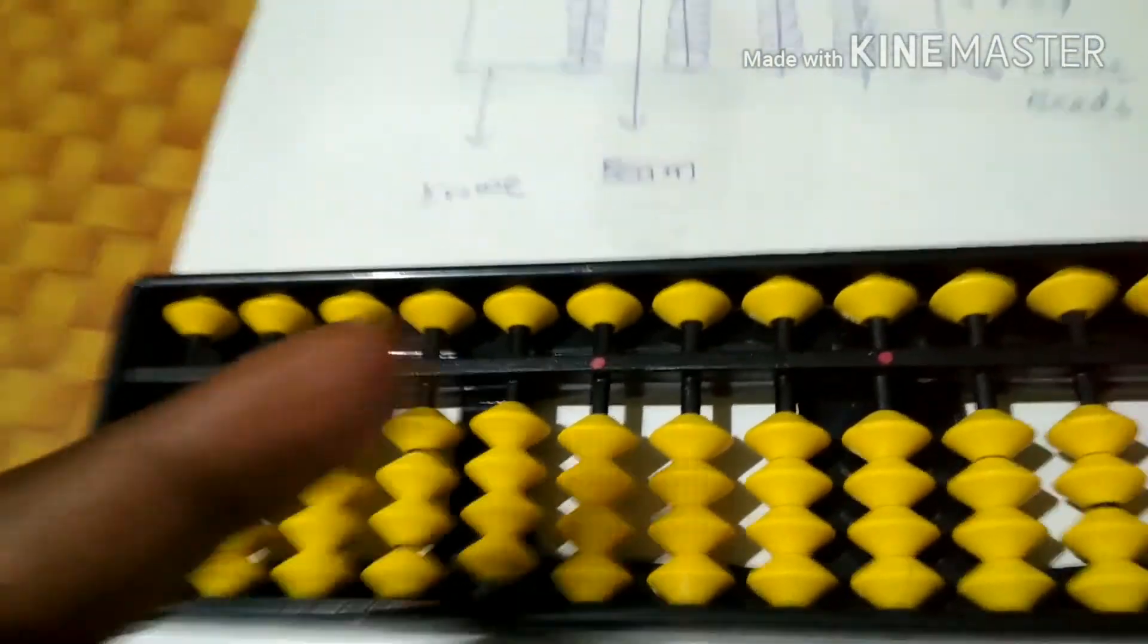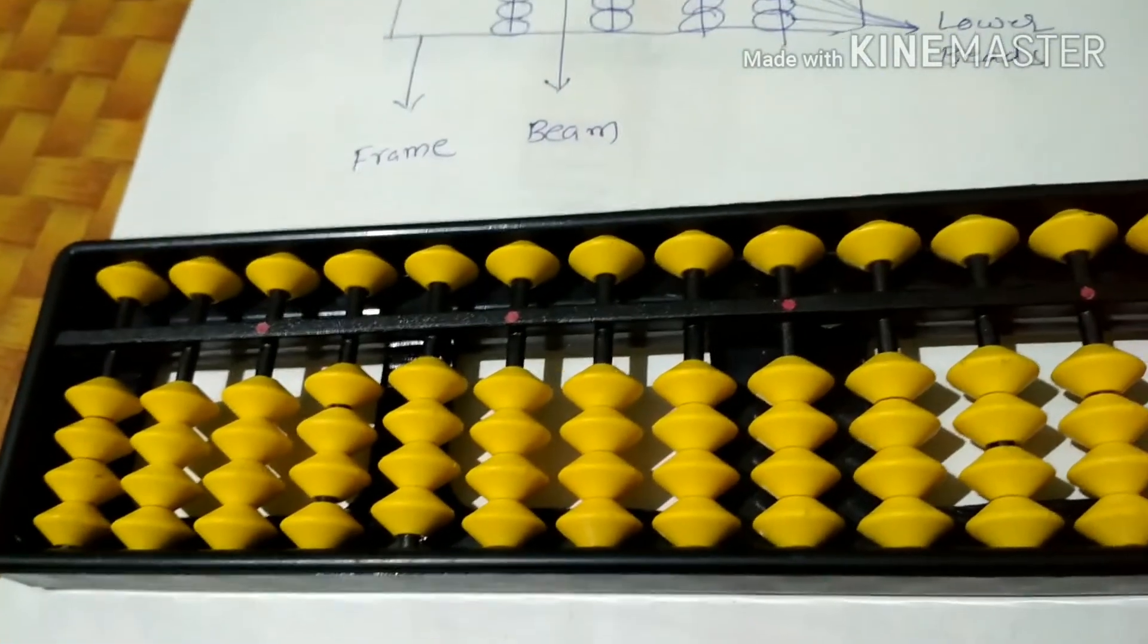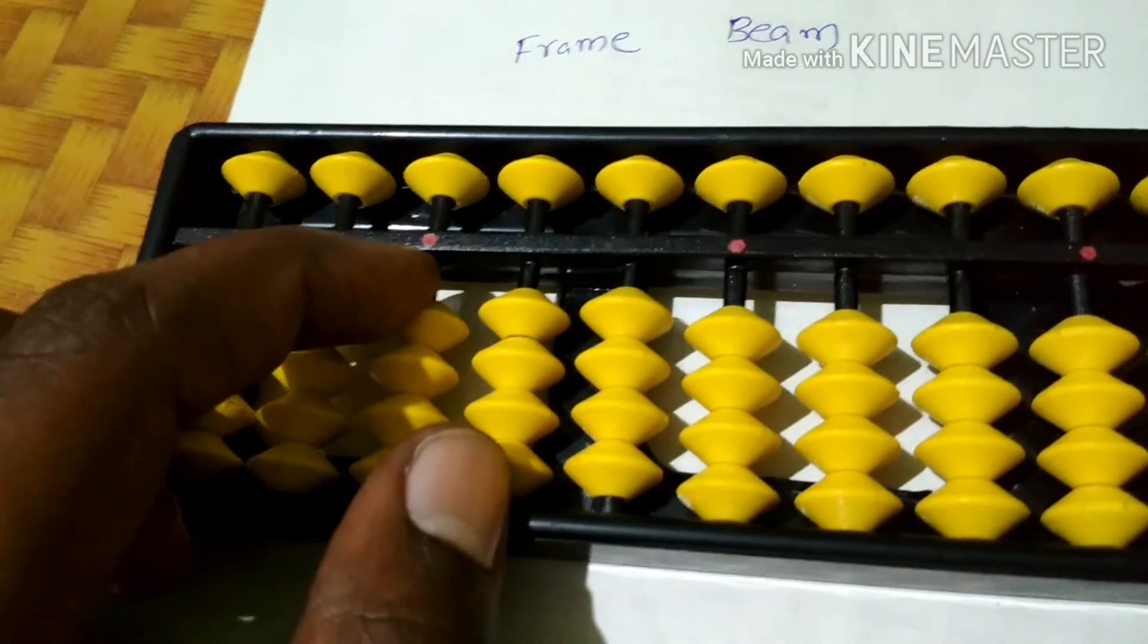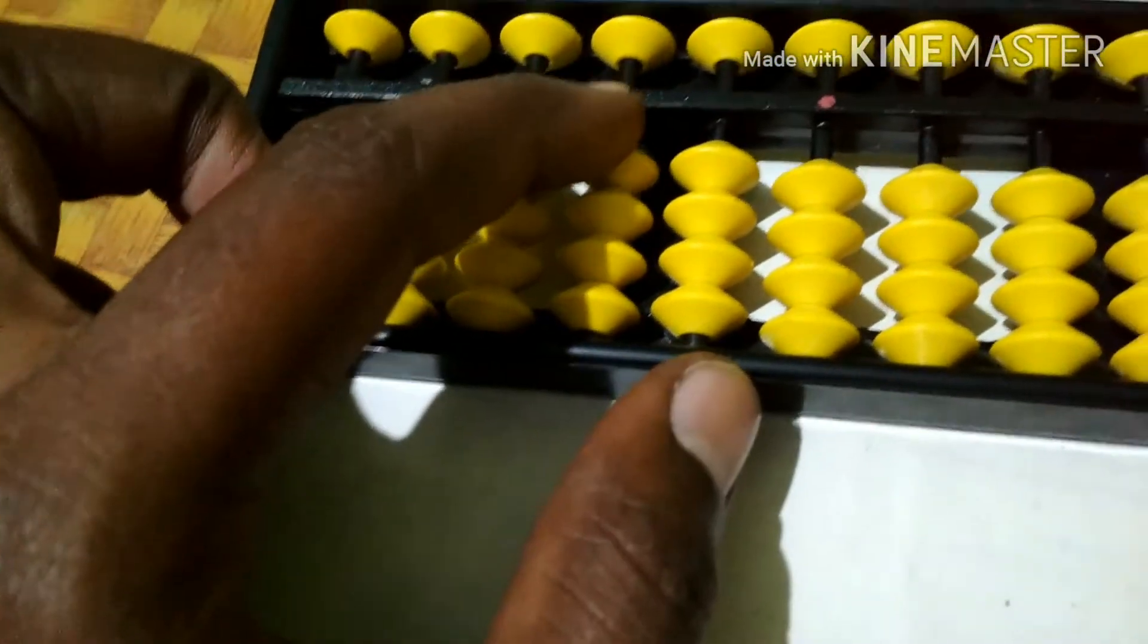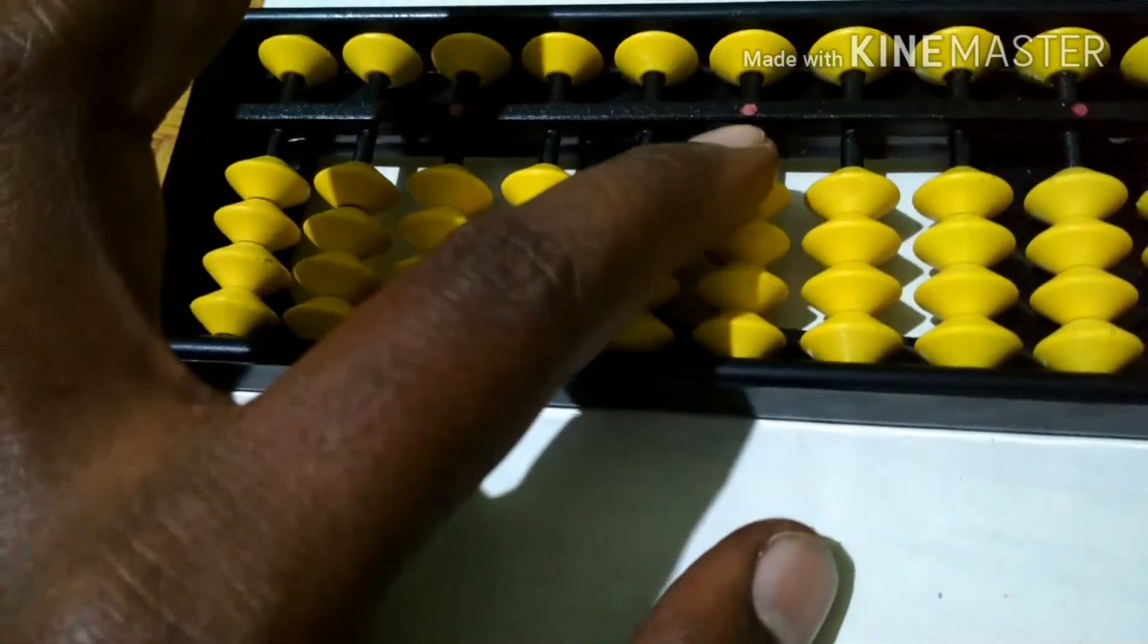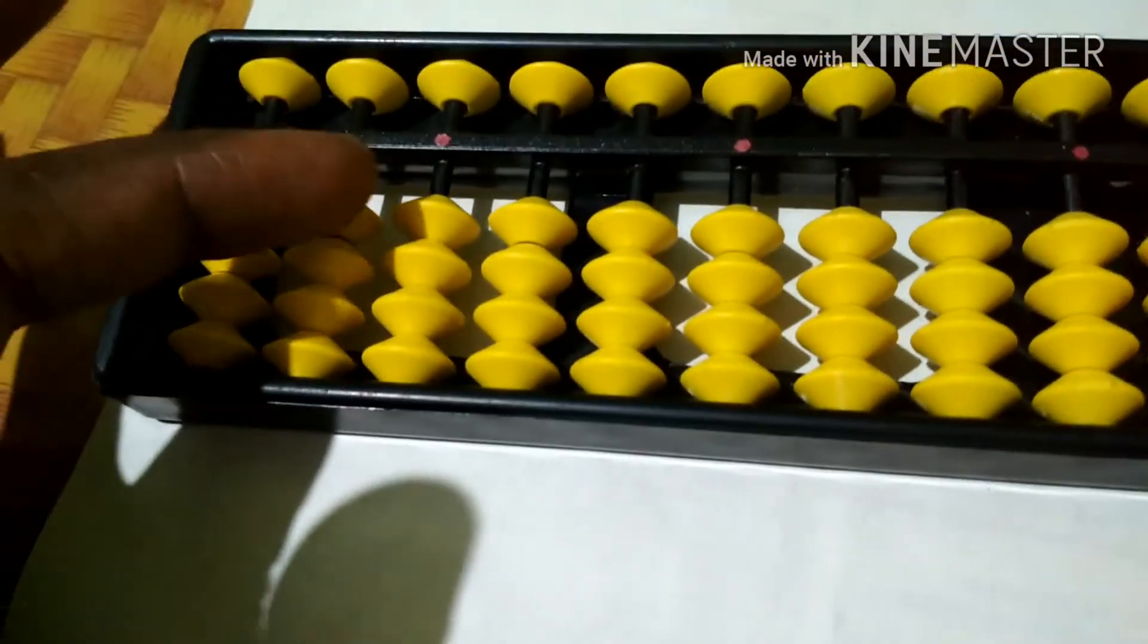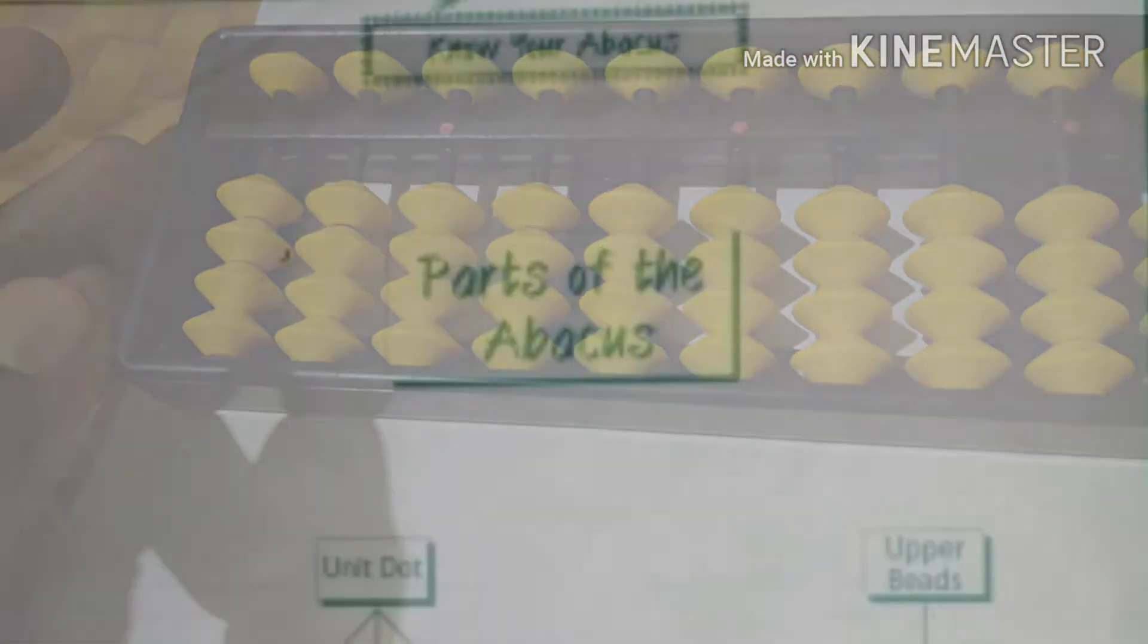From left to right, ones, tens, hundreds, thousands, ten thousands. So you can count all the numbers in the next class. Thank you.